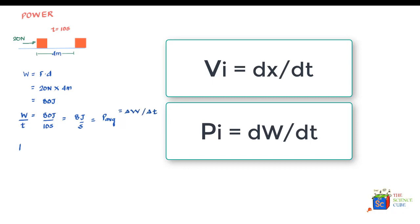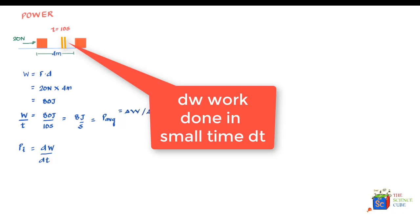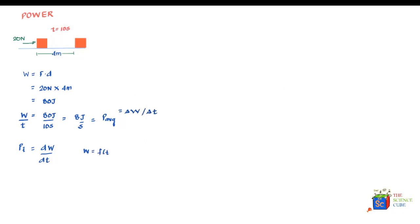Likewise, we can have instantaneous power — the power delivered by a force at a moment in time. Denoting instantaneous power as P, this is the first derivative of work with respect to time: dW/dt. For example, if work is a function of time such as W = 2t² + 1, then to find the instantaneous power at t = 1 second, dW/dt = 4t, and at t = 1 second this equals 4 watts.